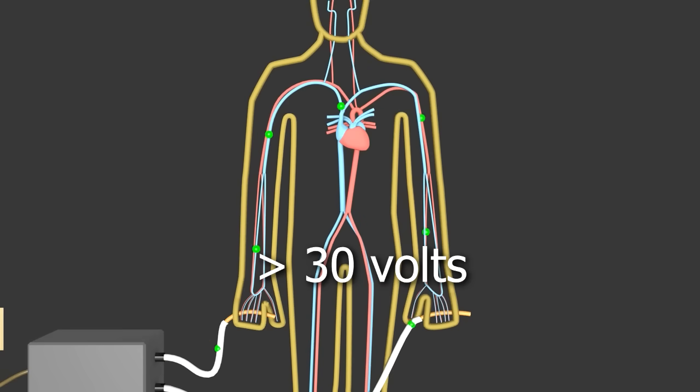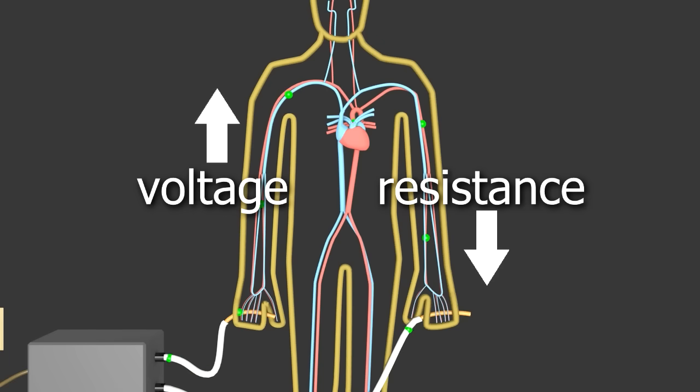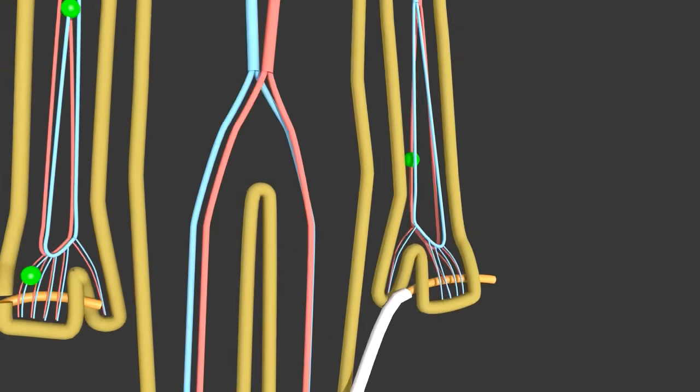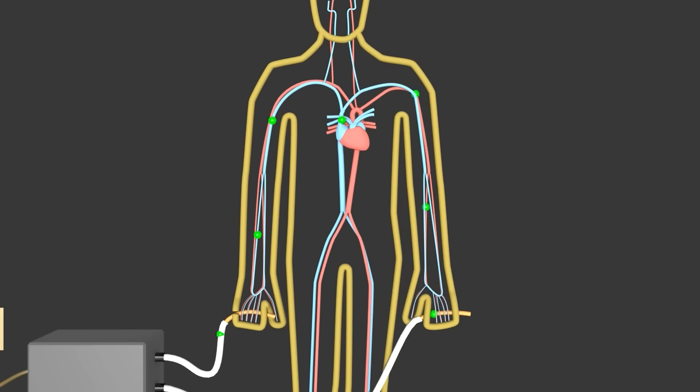The general rule is anything above 30 volts may be hazardous. But the skin resistance doesn't stay constant. The higher the voltage is, the lower the skin's resistance is. And at only around 450 to 600 volts, the skin will break down altogether and allow electricity to easily pass. It will no longer act as much of a resistor at all.